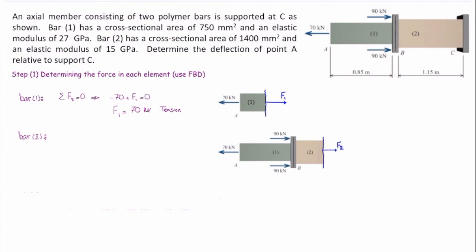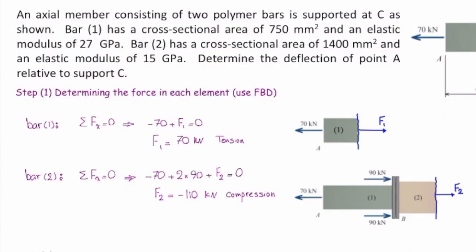In this case, there are four forces acting on that free body. Sum of the forces in the x direction give me negative 70 plus 2 times 90 plus F₂ is equal to zero, and that gives me F₂ equal to negative 110 kilonewtons. Here, the negative sign stands for the compression force in that element. Any questions?